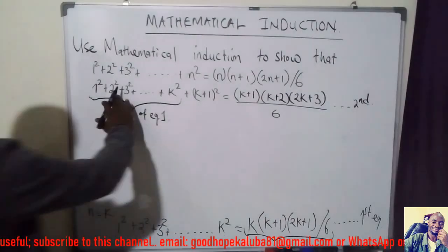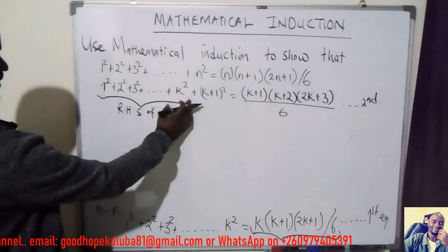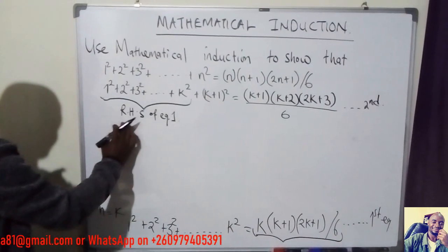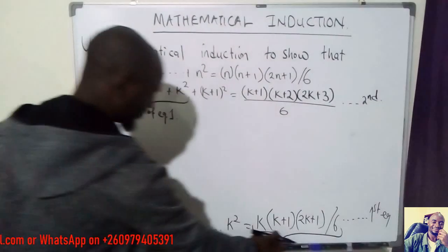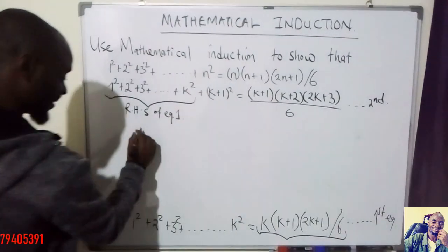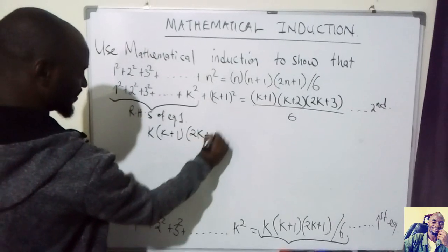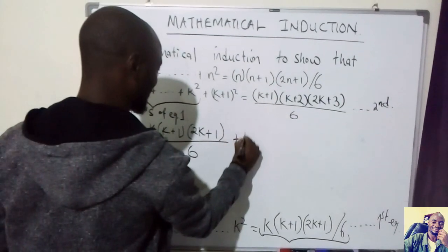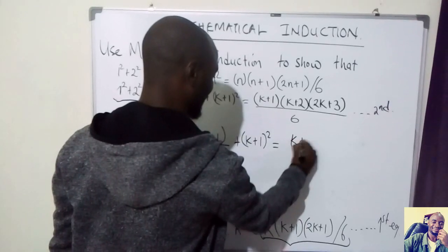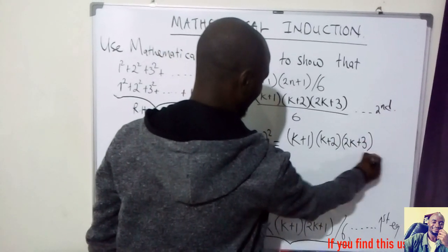So our left-hand side from equation 2, after substitution, becomes k(k+1)(2k+1) over 6 plus (k+1) squared. This should equal the right-hand side (k+1)(k+2)(2k+3) divided by 6.